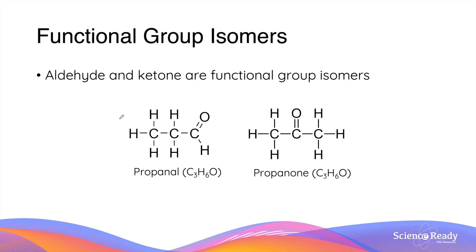Not only are they similar, aldehyde and ketone molecules are functional group isomers. Functional group isomers are molecules with the same molecular formula but different functional groups. For example, propanal and propanone both have the molecular formula C3H6O.